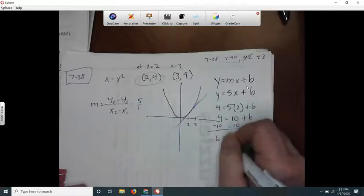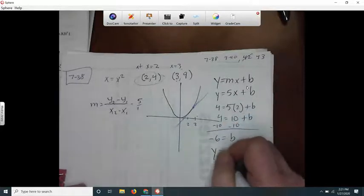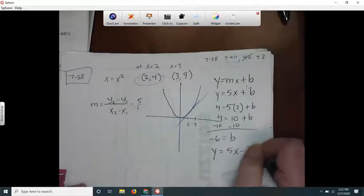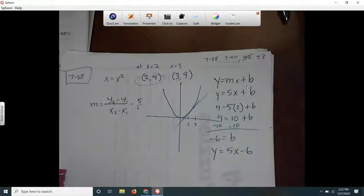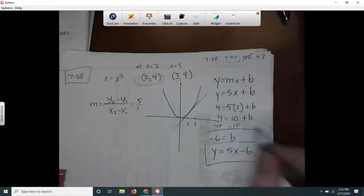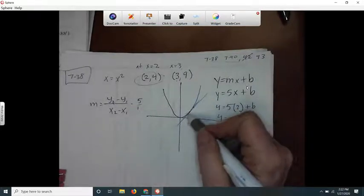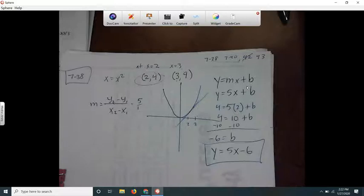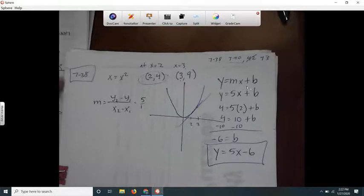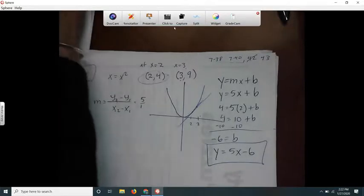So it's y equals 5x minus 6. Let's check that and see if that works. Yeah, so that's nice. And they're trying to get at something else that we're going to learn later with instantaneous velocity stuff and lines tangent to curves and stuff.